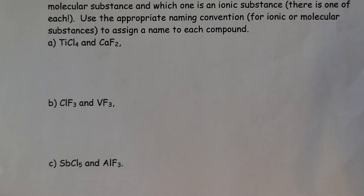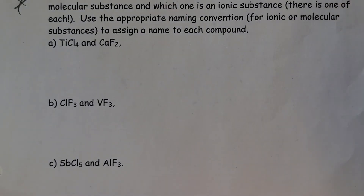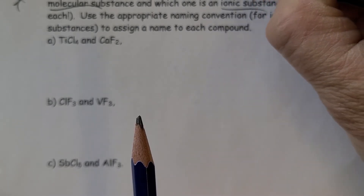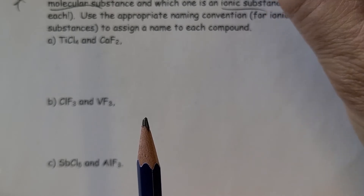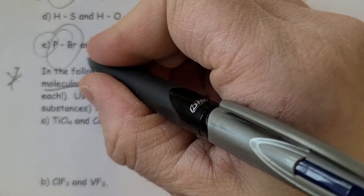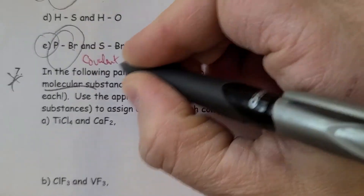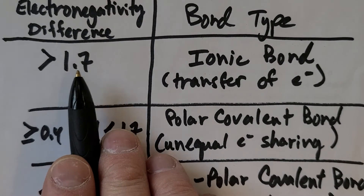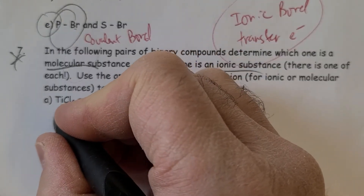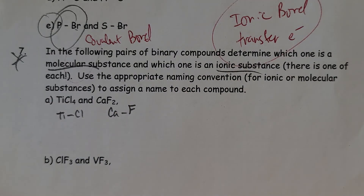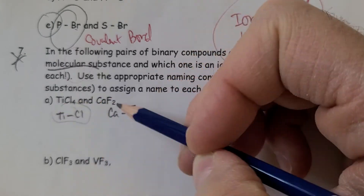The last question asks you to look at pairs of binary compounds and determine which is the molecular substance and which is the ionic substance — in other words, which involves electron transfer (ionic) and which involves electron sharing (covalent). We'll compare a titanium-chlorine bond and a calcium-fluorine bond.